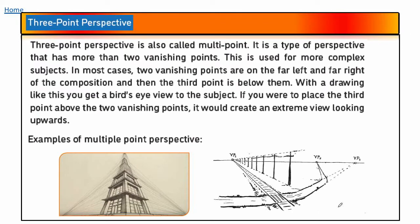Lastly, we look at three-point perspective, which is similar to one-point and two-point perspective but has three vanishing points, also known as multi-points. Two vanishing points are on the far left and far right of the composition, and the third point is below them. With a drawing like this you get something called a bird's eye view — one vanishing point here, another on the far right, and another on the top. There are two sets of examples showing the use of multi-point perspective.